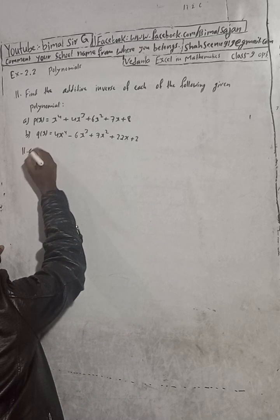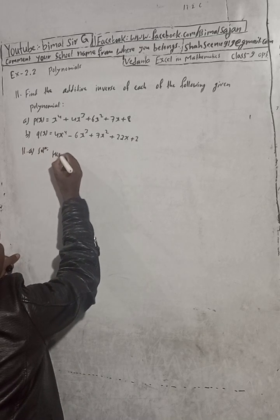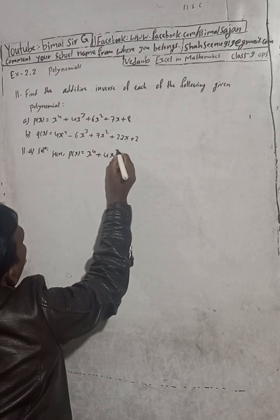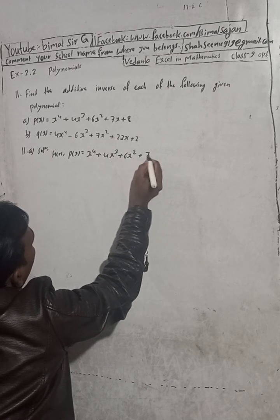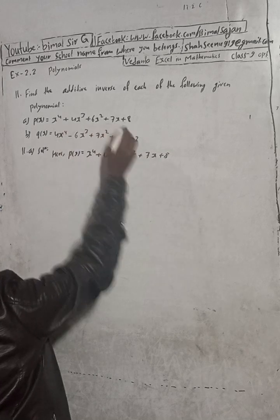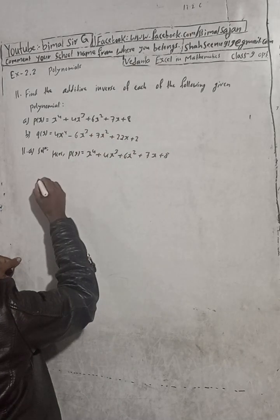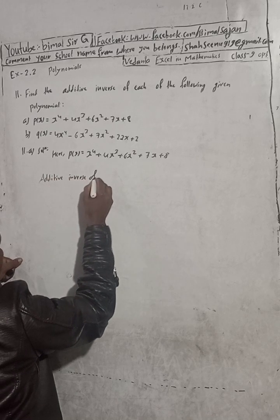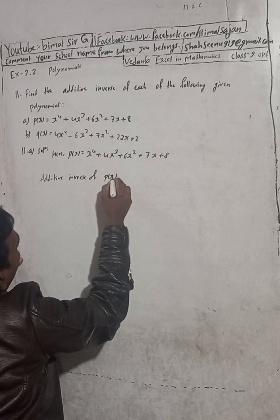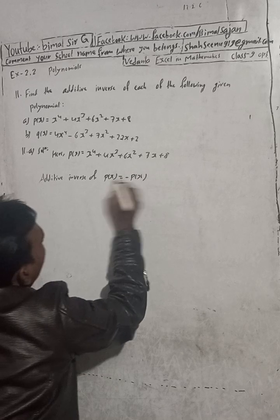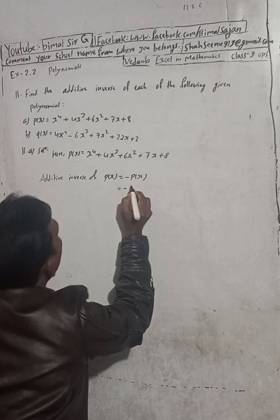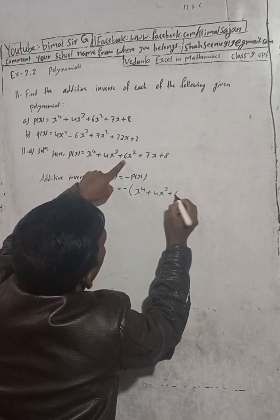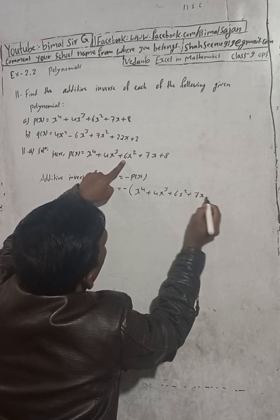11a solution: P(x) is equal to x to the power 4 plus 4x cubed plus 6x squared plus 7x plus 8. Now the additive inverse of P(x) is equal to minus P(x), which is minus left bracket x⁴ + 4x³ + 6x² + 7x + 8 right bracket. You just have to change the sign.